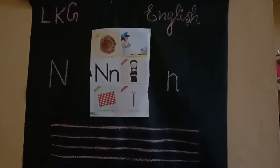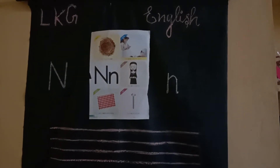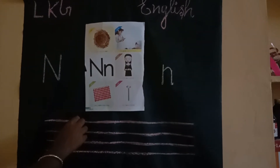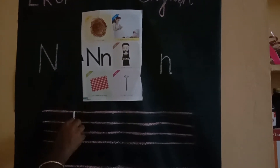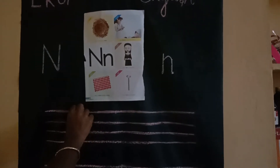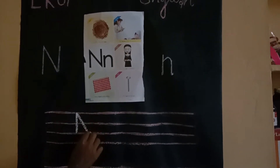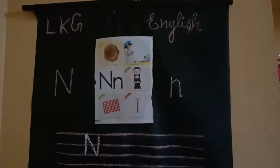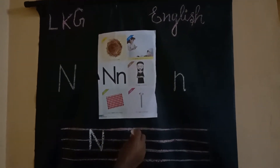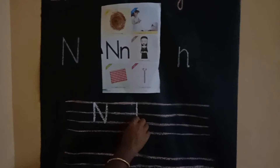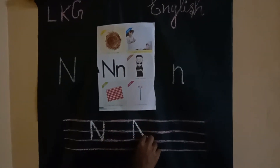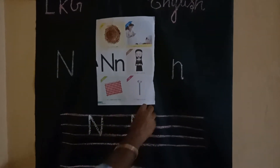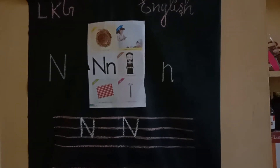Okay children, next how to write N. Listen here. First, capital letter N. You should write a standing line, then a slanting line, then again a standing line. This is a capital letter N.